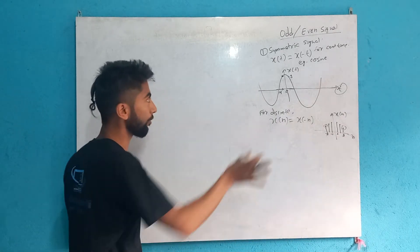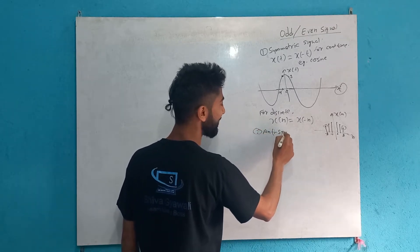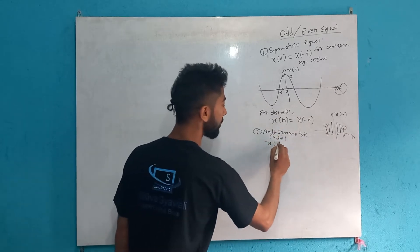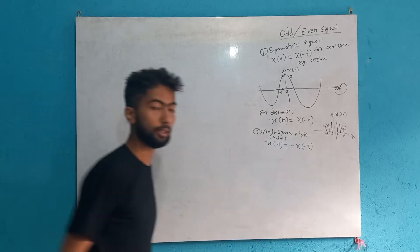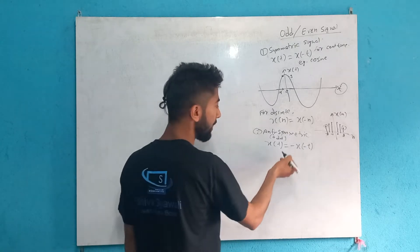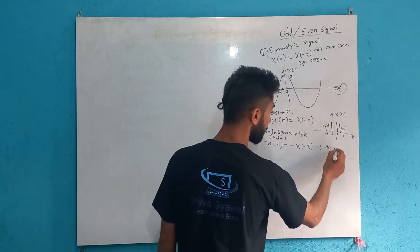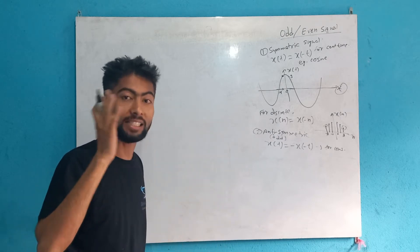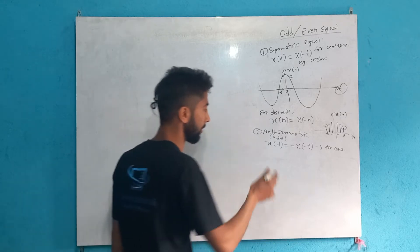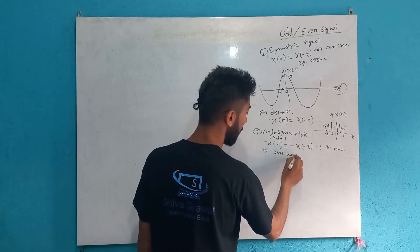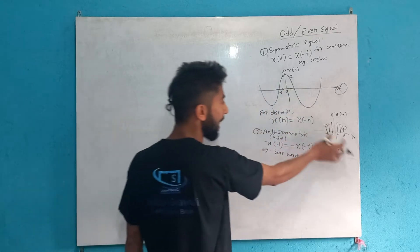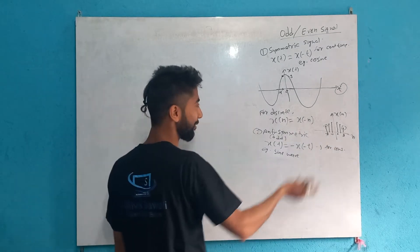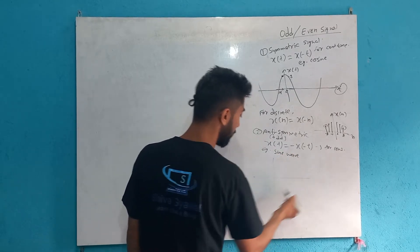Now, the second property: the anti-symmetric signal. For an odd signal, the condition is x(t) = -x(-t). Whichever signal satisfies this anti-symmetric condition is called an odd signal. We can draw this diagram for both continuous and discrete time. As an example, the sine wave is an odd signal.